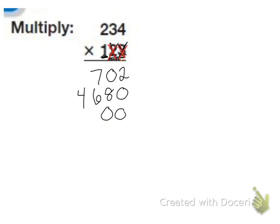Now we multiply by the ones place. One times four is four. One times three is three. And one times two is two.